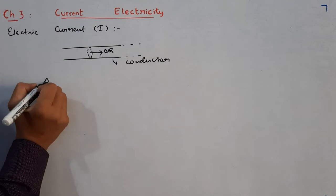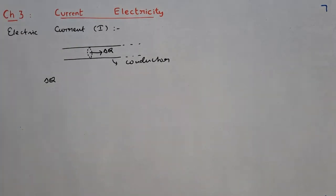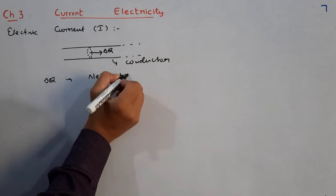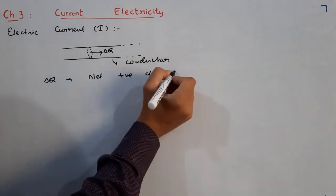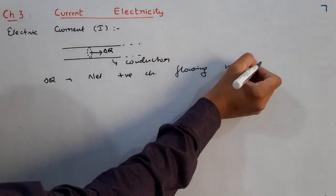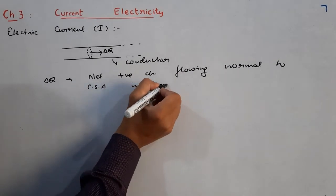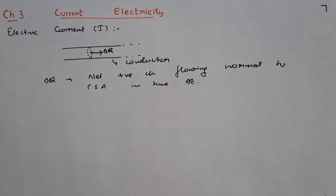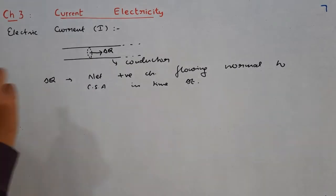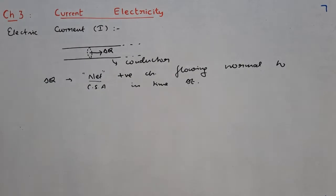Through this cross section you have to observe the flow of charges. Suppose some charge delta q crosses this cross section normally in some time delta t. Delta q is the net positive charge flowing normal to the cross sectional area in time delta t. And delta q is the net charge — don't miss this term 'net'.